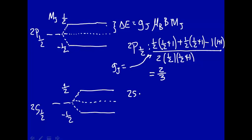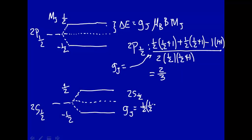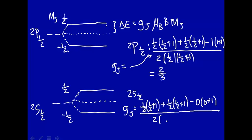Now for the doublet S one-half state, g_J equals: in the numerator, j(j+1) is one-half times three-halves, plus s(s+1) with s one-half gives one-half times three-halves, minus l(l+1) where l equals zero gives zero times one. The denominator is 2 times one-half times three-halves. This comes out to be two. So we've determined that g_J is two-thirds for the doublet P one-half state, and g_J equals two for the doublet S one-half state.